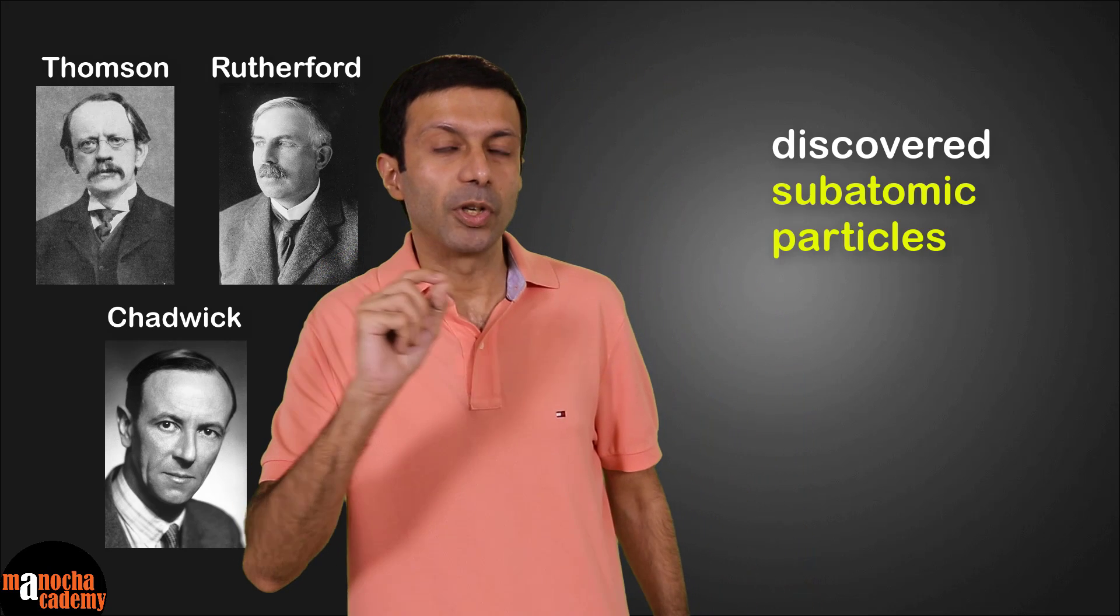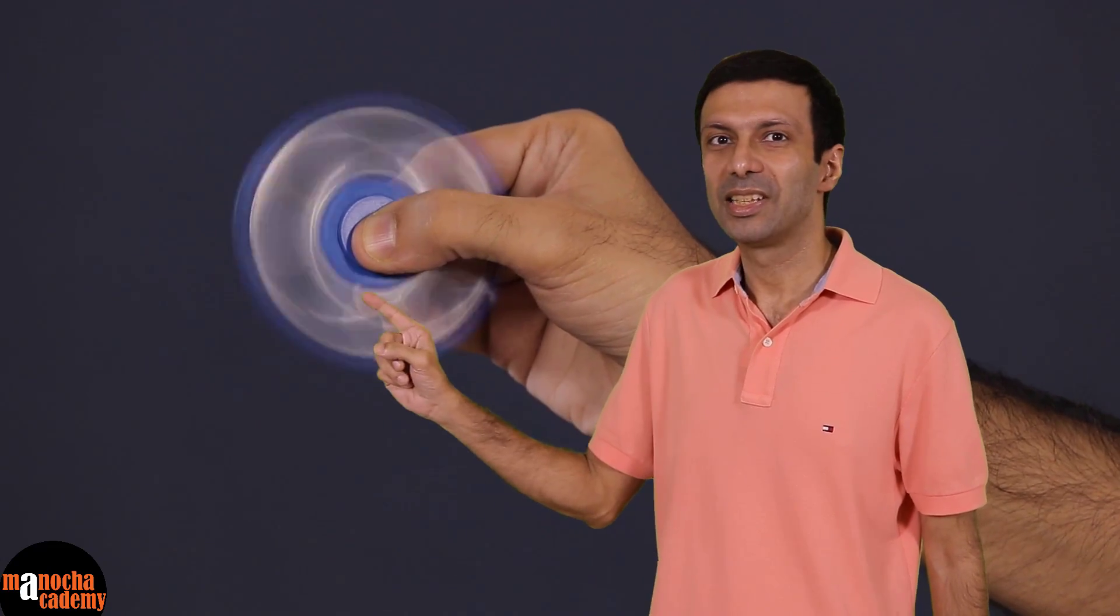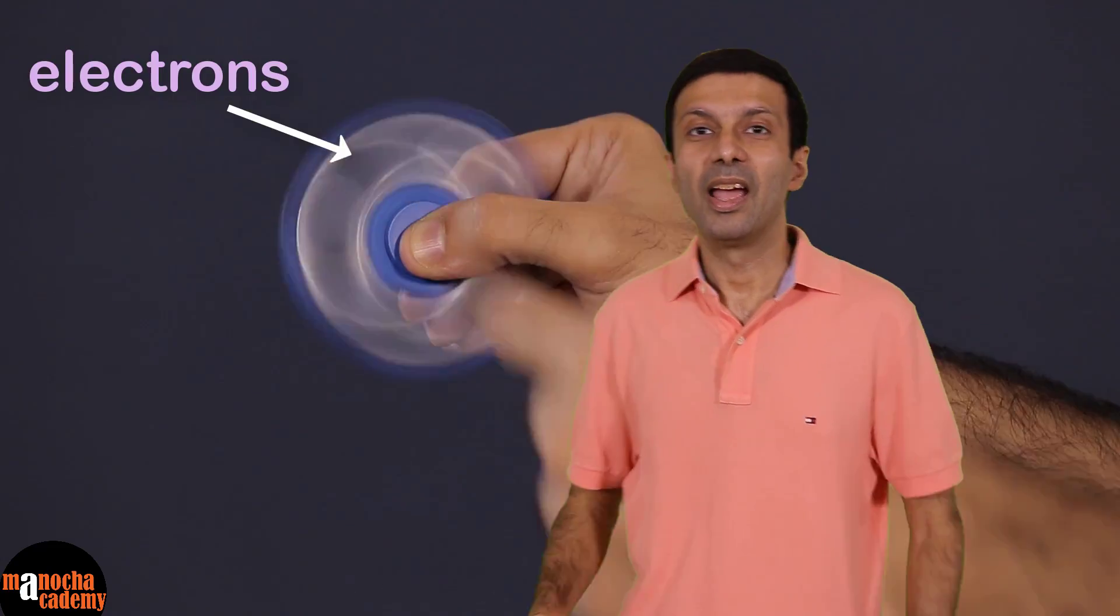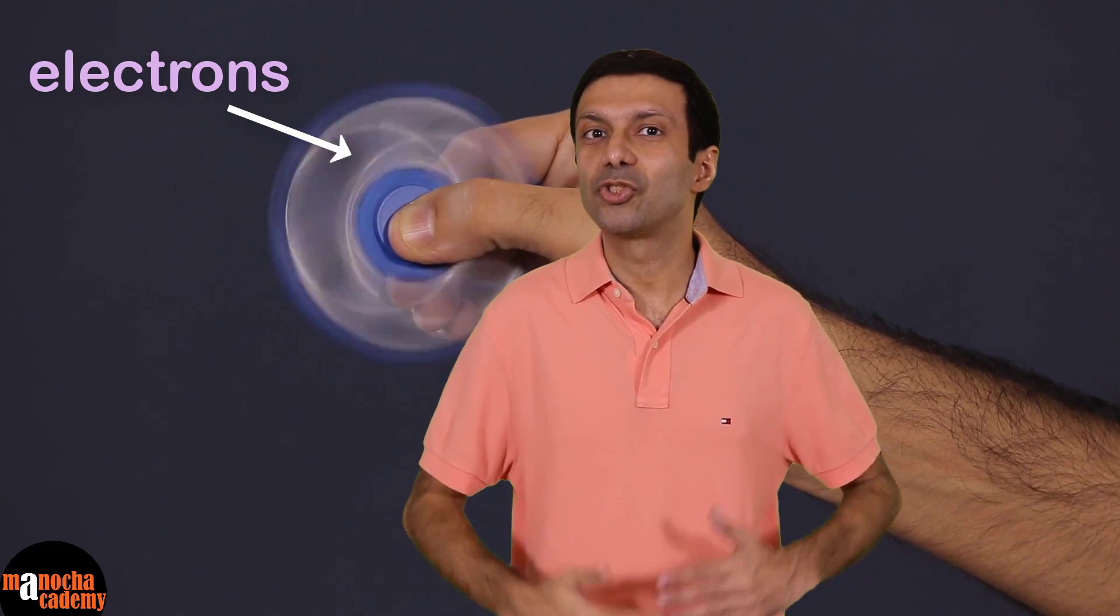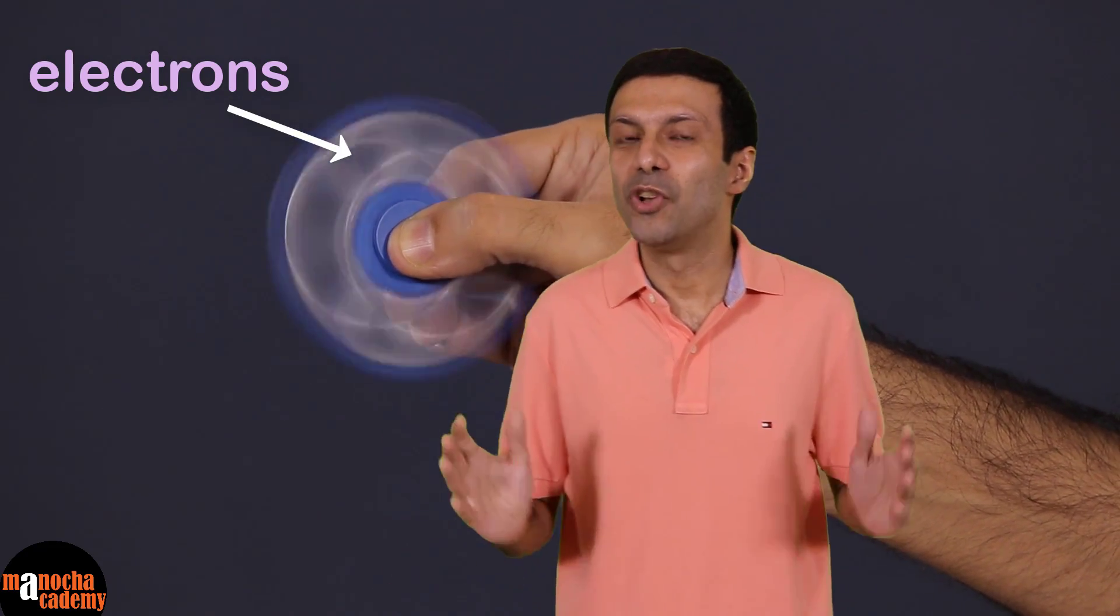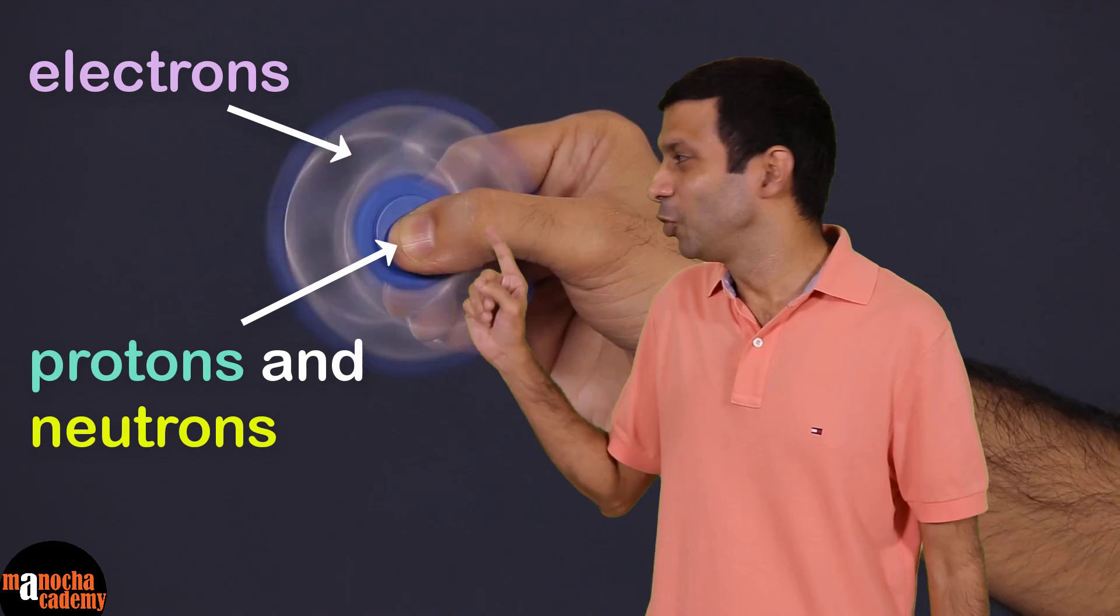Scientists such as Thomson, Rutherford and Chadwick discovered subatomic particles. I have a video on Thomson's and Rutherford's model of an atom. In this video I compare the structure of an atom to a fidget spinner so do check it out.